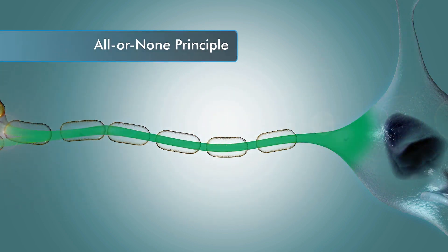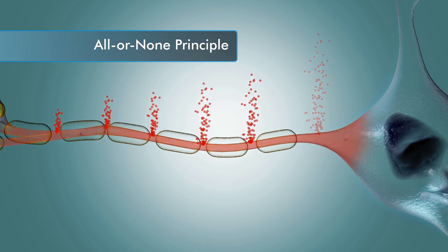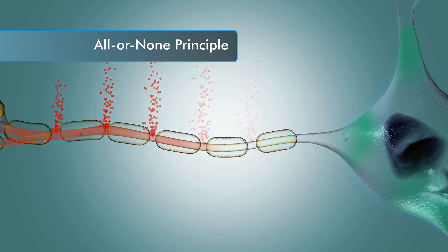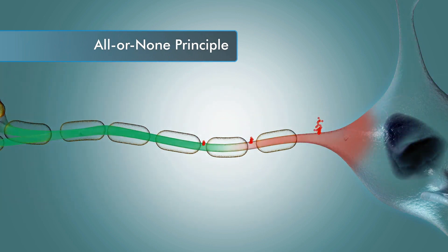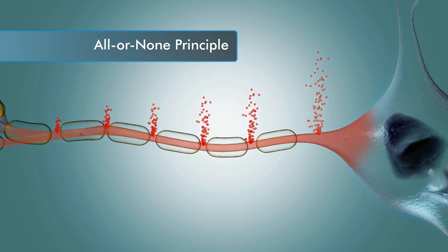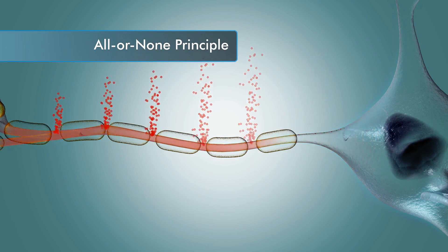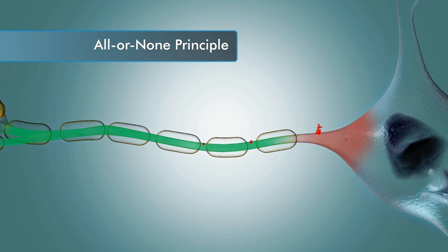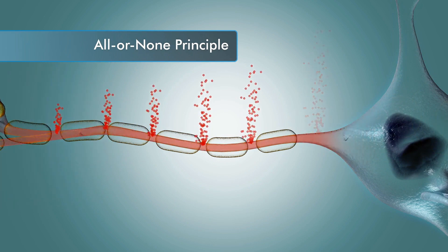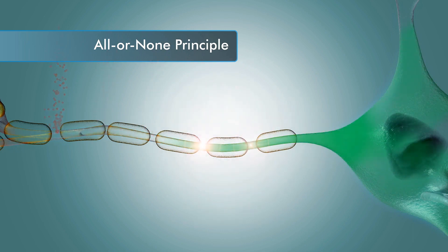In other words, the action potential does not diminish as it travels across the membrane, unlike the graded potential. So either all of the membrane depolarizes and repolarizes, or none of it will. It is also important to note that the amplitude of the action potential is always the same. It is the frequency of the action potentials that signifies a stronger response.